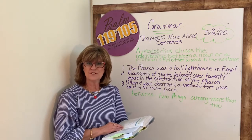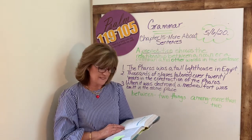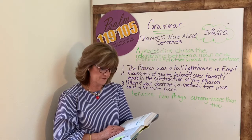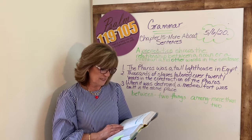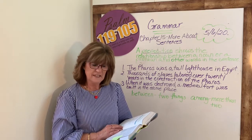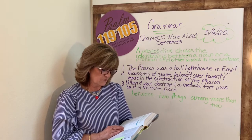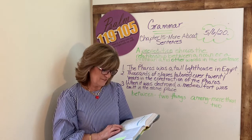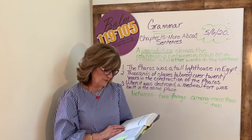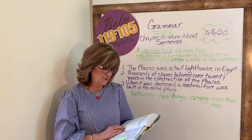Before we do that, I want to read some more verses to you from Matthew chapter 6. This is verse 27: 'And which of you by being anxious can add a single hour to his lifespan? And why are you anxious about clothing? Consider the lilies of the field, how they grow. They neither toil nor spin. Yet I tell you, even Solomon in all his glory was not arrayed like one of these. But if God so clothes the grass of the field, which today is alive and tomorrow is thrown into the oven, will he not much more clothe you, O you of little faith?'